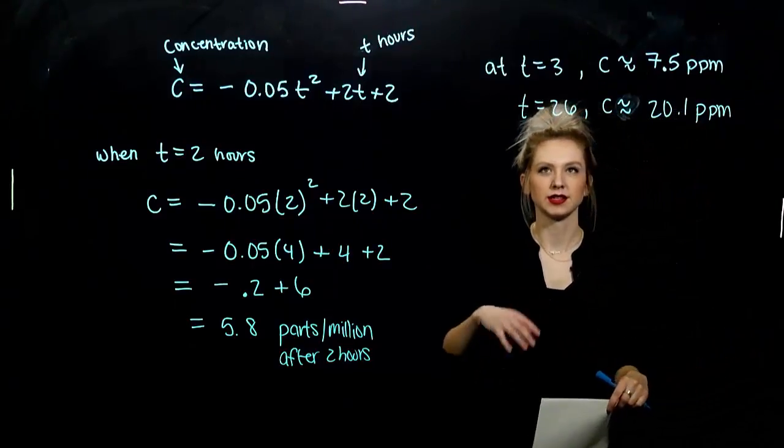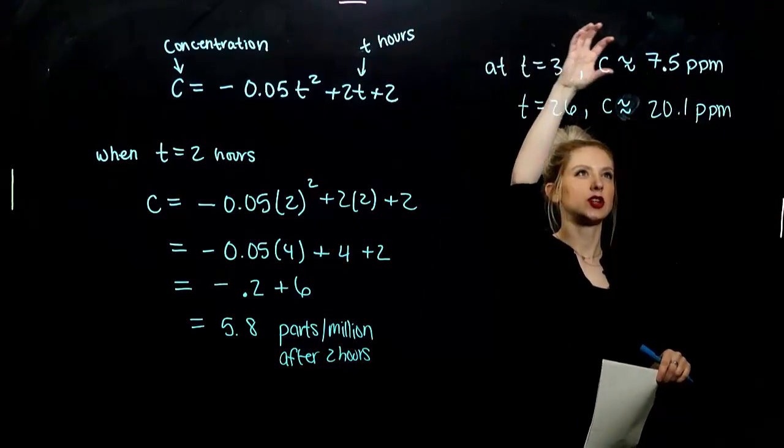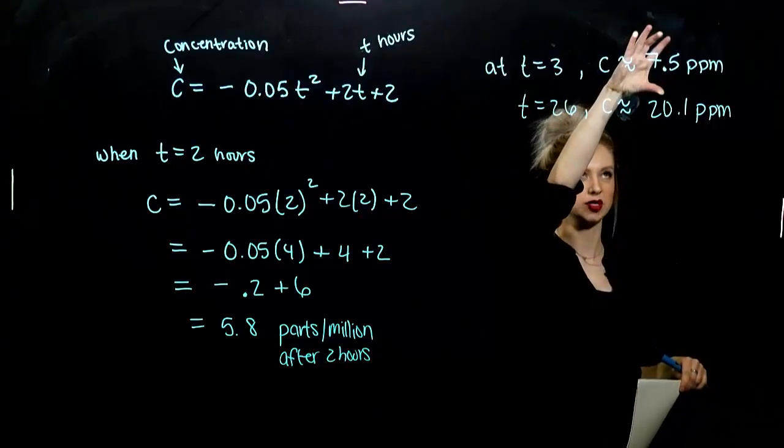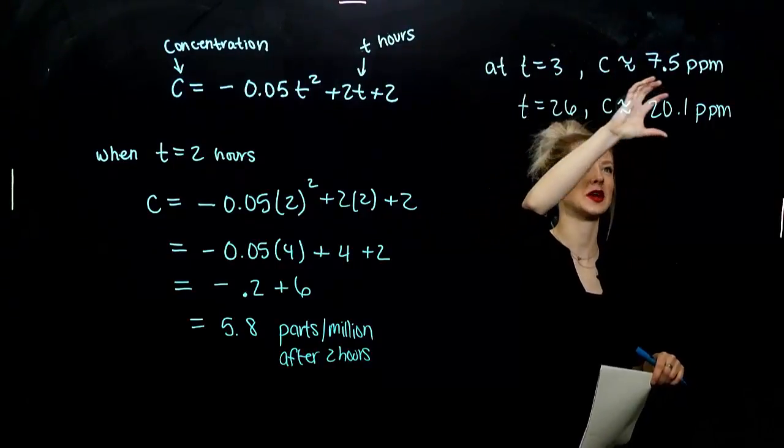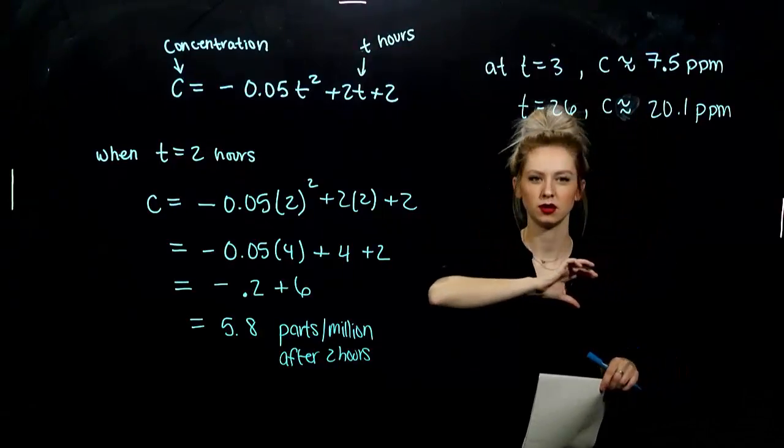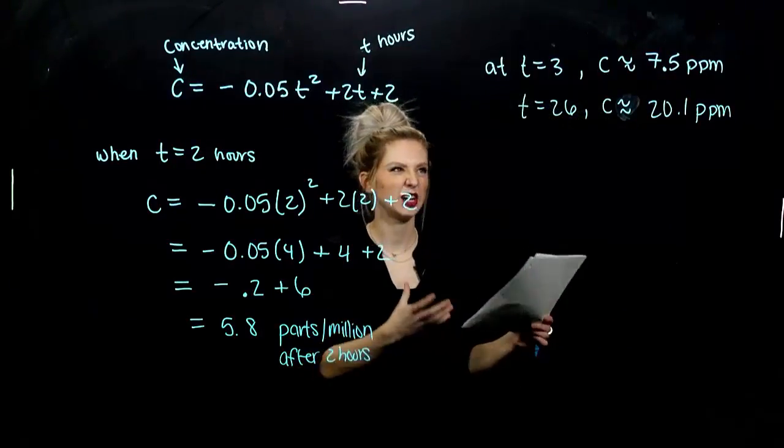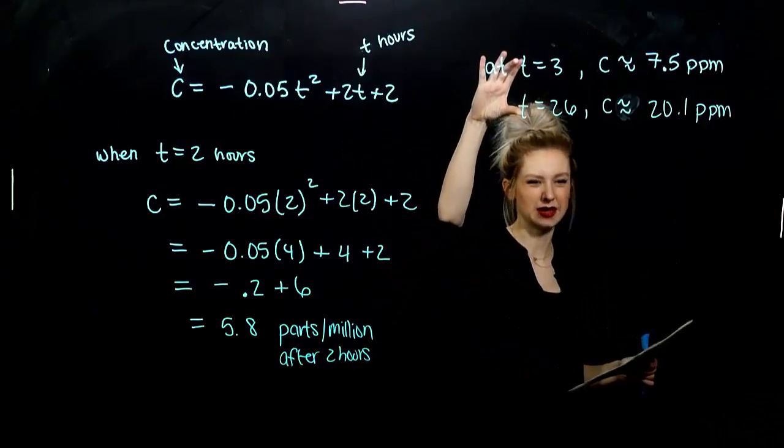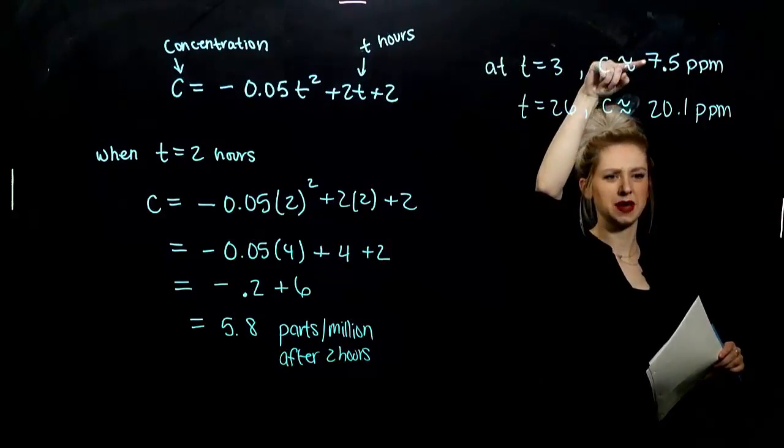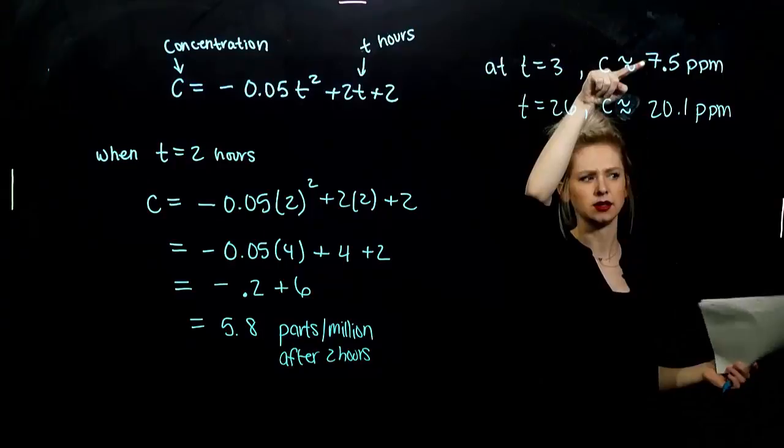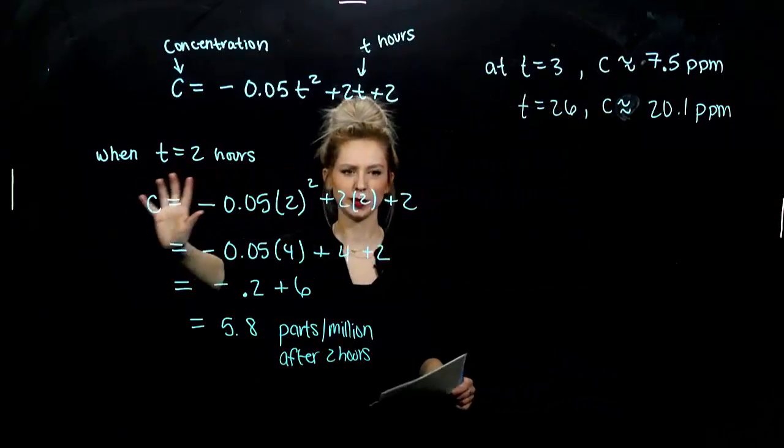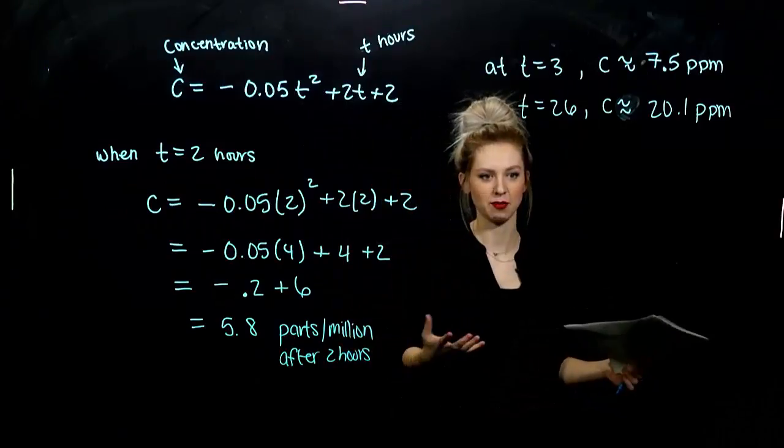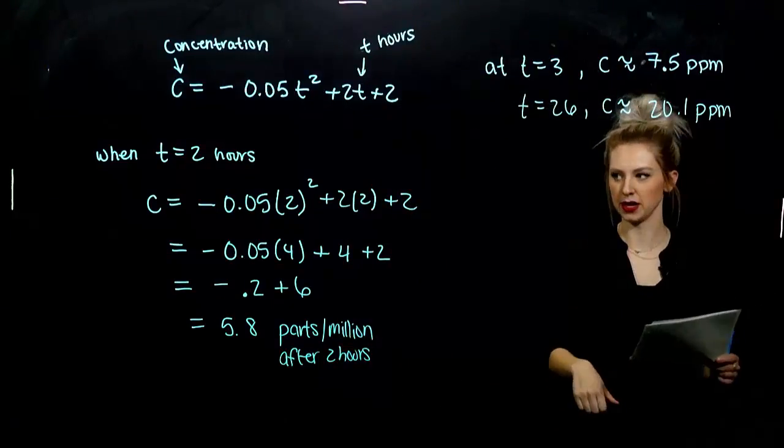So we can sum that up pretty concisely. At t=3, concentration is around 7.5 parts per million. Concentration after 26 hours, around 20.1 parts per million. So hopefully you can see the lacking factor of just looking at the graph. Your estimation might be a little bit off from mine, or off from someone else in this class. But if we use this formula, then we all have the same precise, exact measurement at that time.